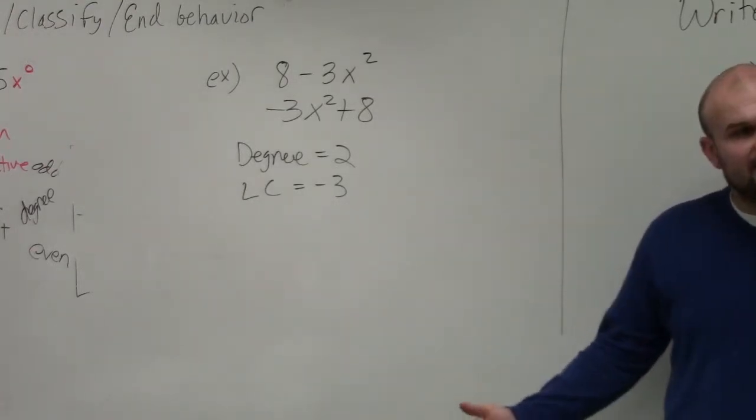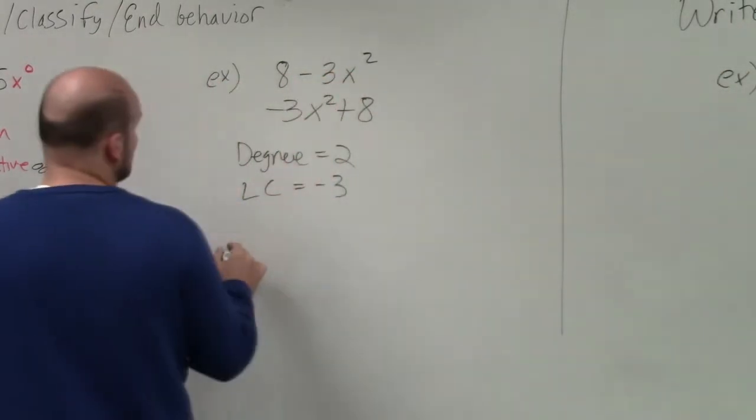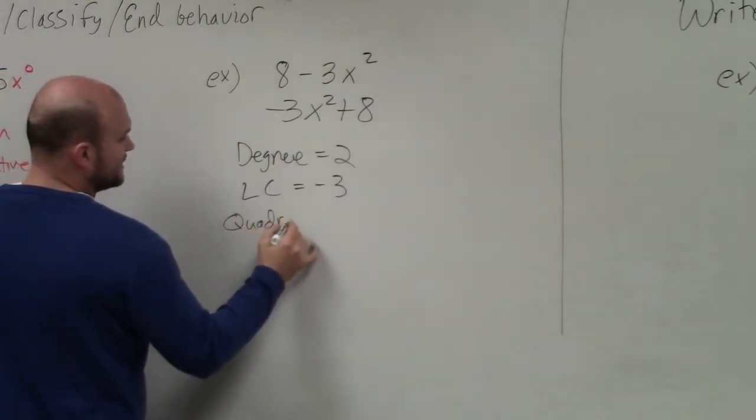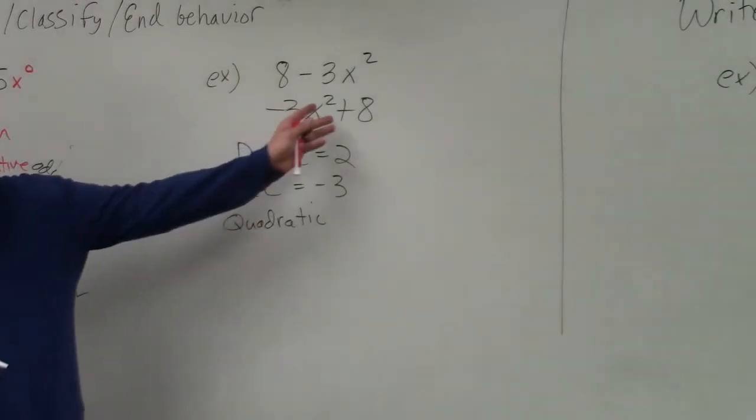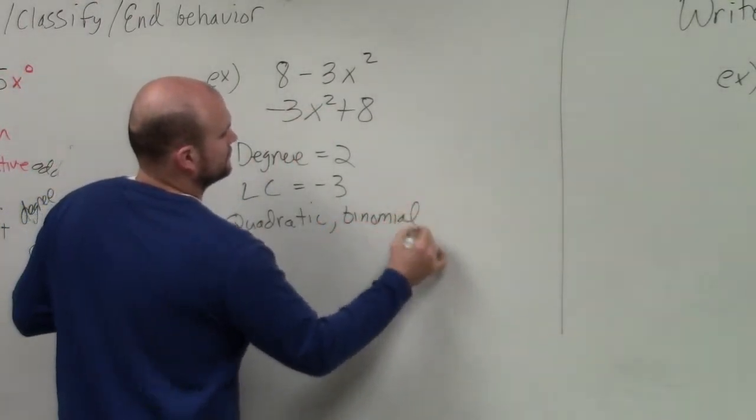So now let's go and classify it. Again, we classify by the degree. Well, the degree is 2, so therefore it is a quadratic, and we only have two terms, so it's called a binomial.